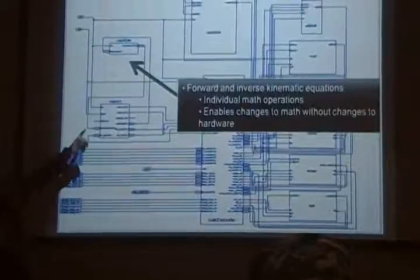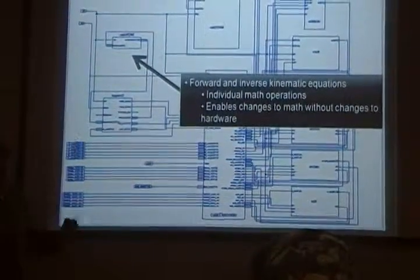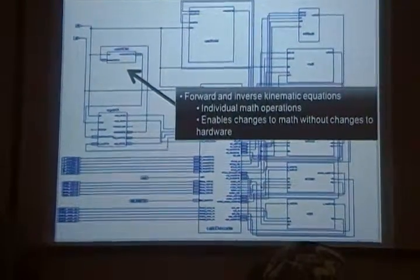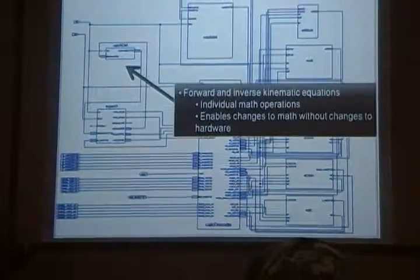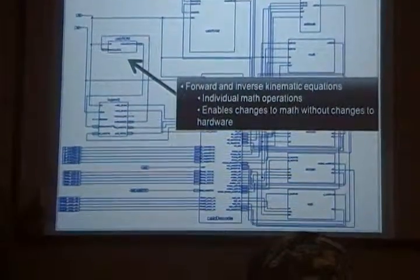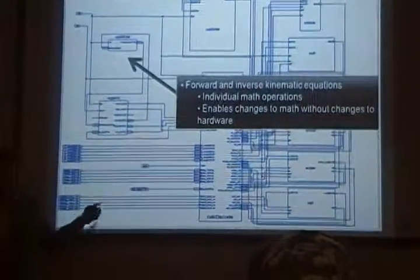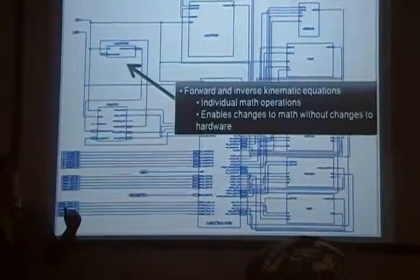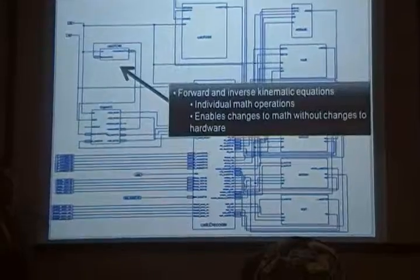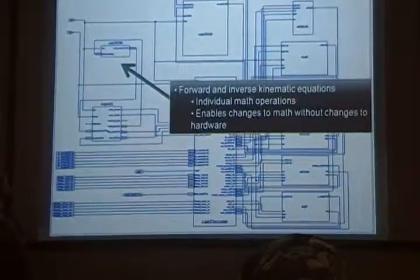And we use assembly language because not only can we make easy changes to the code and to the equations, but theoretically, depending on the operations that are necessary, this system could be used for any configuration of robotic arm. Right now we have a 5R, but it could be anything. We can write the right equations for it.